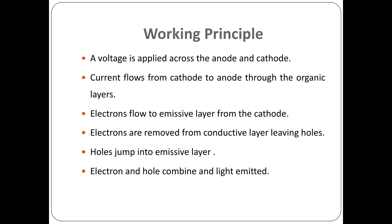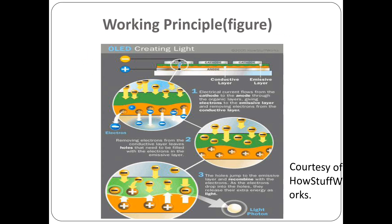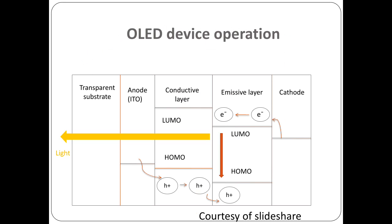Moving to the working principle: from this figure we get an easy idea of how an OLED works. Figure one shows that after feeding supply, electrons from the cathode move close to the emissive layer and electrons from the conductive layer move to the anode. In figure two, after electrons move from the conductive layer to the anode, holes remain in the conductive layer. In figure three, the holes jump to the emissive layer, recombine with electrons, and due to this recombination, energy is released in the form of light.